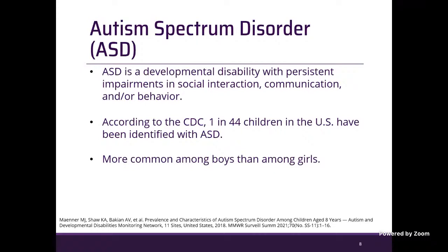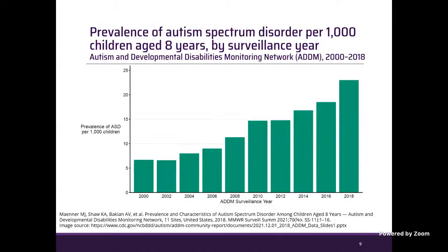ASD is a developmental disability with persistent impairment in social interaction, communication, and/or behavior. Recent data show that one in 44 children in the United States have been identified with ASD. It is more common in boys compared to girls — boys are about four times more likely to be diagnosed with ASD.